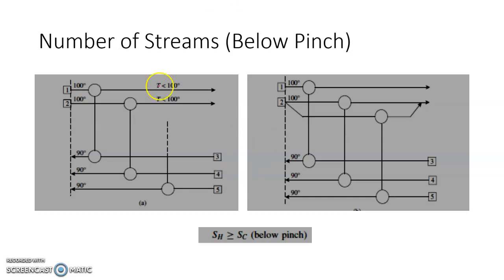If we do not satisfy this condition below pinch, the temperature difference will not remain as required and ΔT minimum cannot be maintained. So we need to split the hot stream below pinch in that case. This is the first condition required for heat exchanger networking: above pinch, hot streams must be less than or equal to cold streams; below pinch, hot streams must be greater than or equal to cold streams. Other conditions will be discussed in the next video.